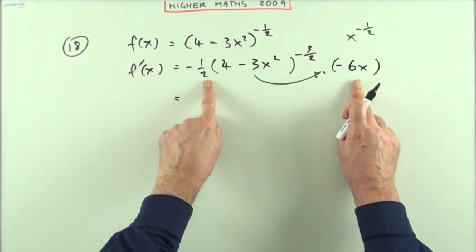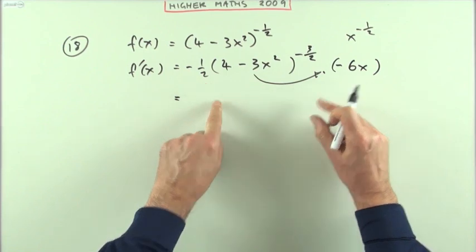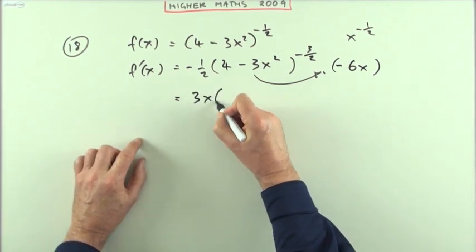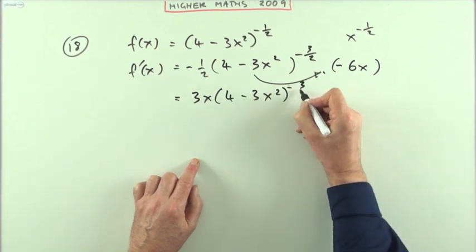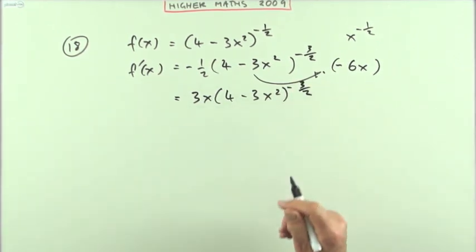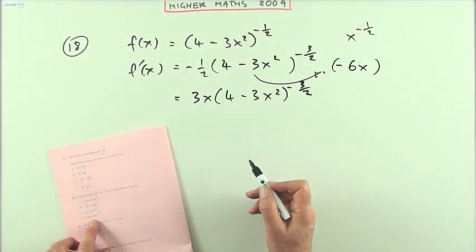So all together you've got, taking this product, negative a half times negative six x makes three x times four minus three x squared to the power negative three upon two, which is answer d.